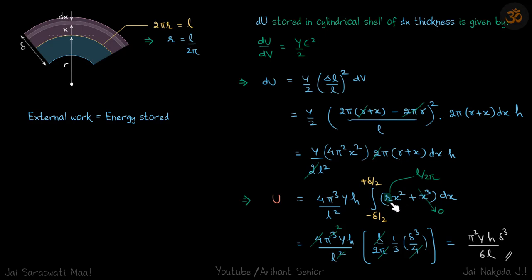And now we can, because r, 2πr is equal to L, and we don't know r but we have to find the answer in terms of L. So now you can replace r with L. So r will be L by 2π. So we do that, put the limits and we get our answer π² Y h delta³ by 6L.